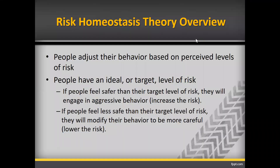Let me give you a brief overview. The theory states that people adjust their behavior based on perceived levels of risk. People have an ideal or target level of risk. If they feel safer than their target level of risk, they will engage in more aggressive behavior, thereby increasing the risk until they hit their target level. If people feel less safe than their target level, they will modify their behavior to be more careful, thereby lowering the risk to reach their target level.